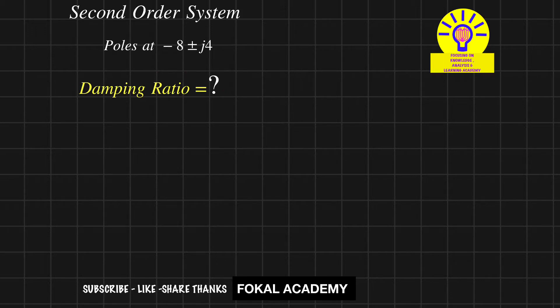The standard equation for finding the poles of a second order system is -ζωn ± jωd, where ωd is the damped frequency. It equals ωn√(1-ζ²). Let's call this equation 1 and the given equation 2.